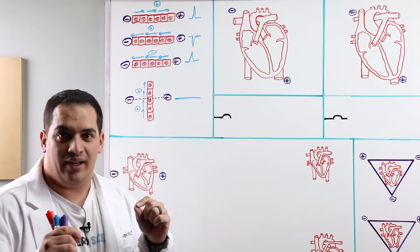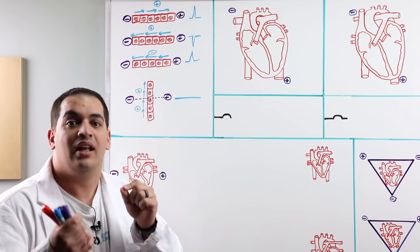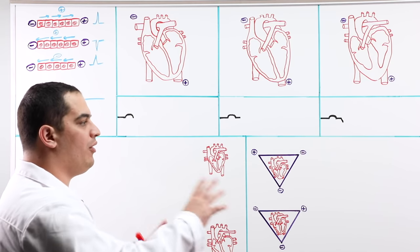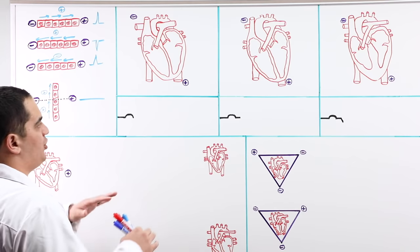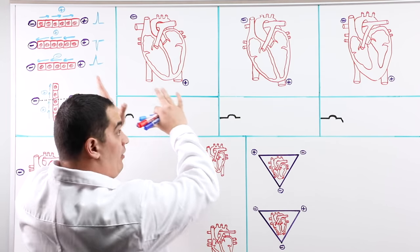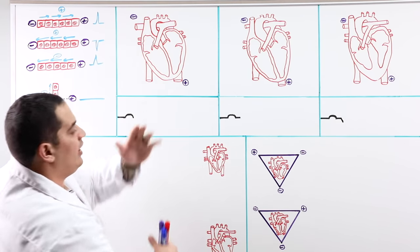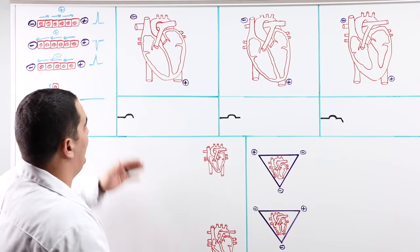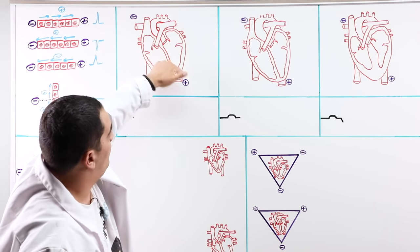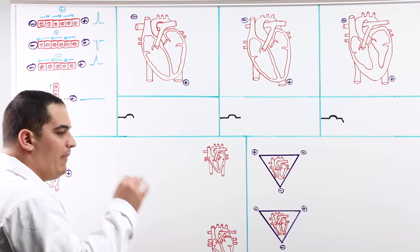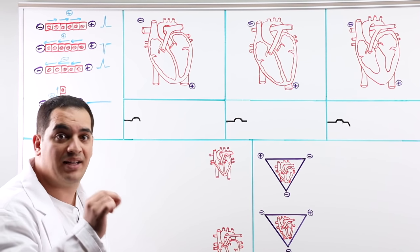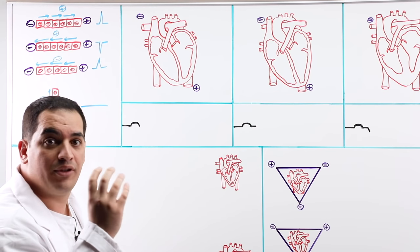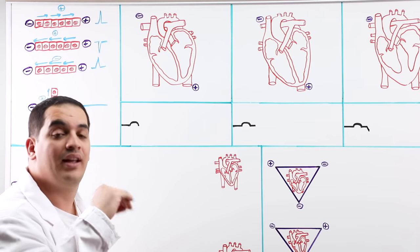Now I want us to take one lead — the most commonly used lead in rhythm strips of 12-lead EKGs — lead two, and map out the entire EKG waveform. In lead two, the negative electrode is on the right arm and the positive electrode is on the left leg, creating an axis going in that diagonal direction. Think of the positive electrode as an eye: if positive charge is coming towards it, it's positive; if it's going away, it's negative.